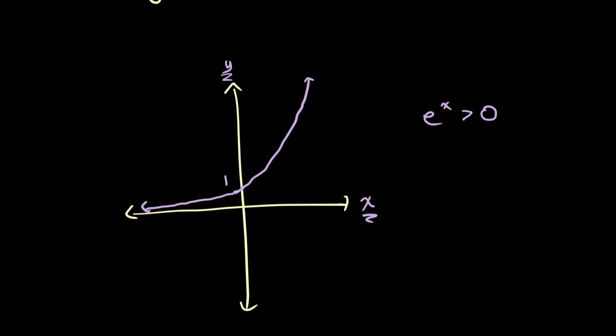We also know that at the point where x equals 0, the y-value, or value for E to the power of x, is 1, because any number taken to the power of 0 equals 1.